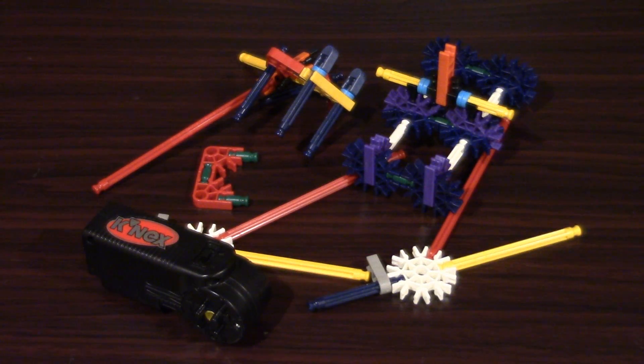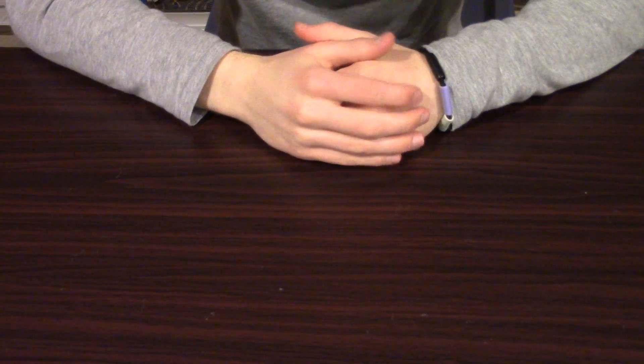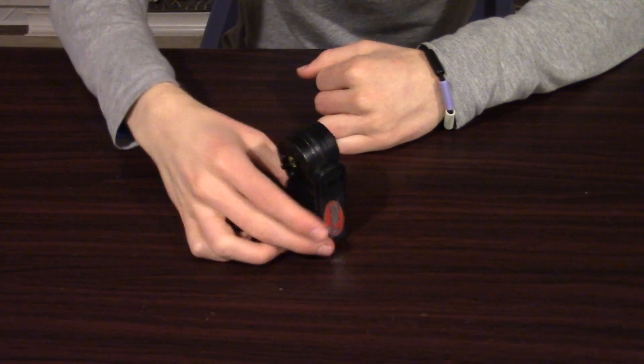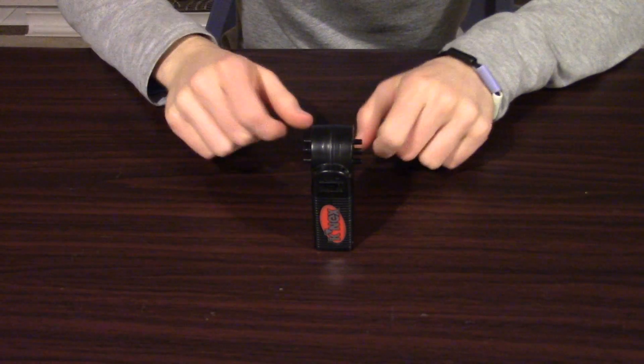All right, now that we have all of the sections assembled, it's time to put all of them together. So we're going to start with the motor, and we're going to place it vertically with the switch facing out.